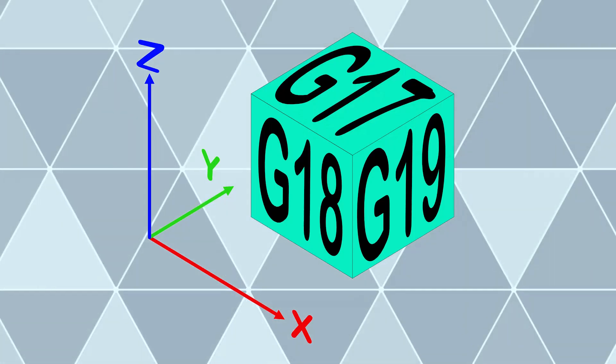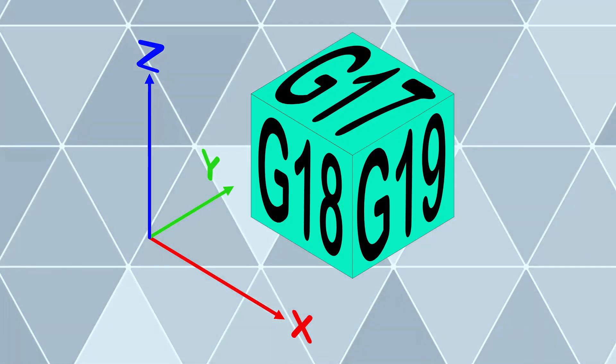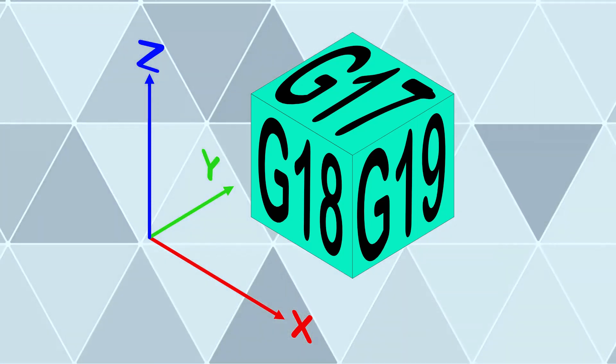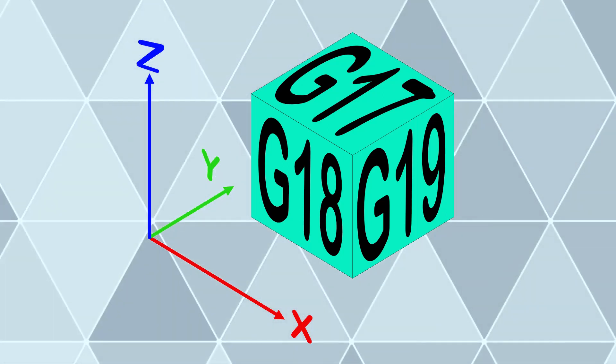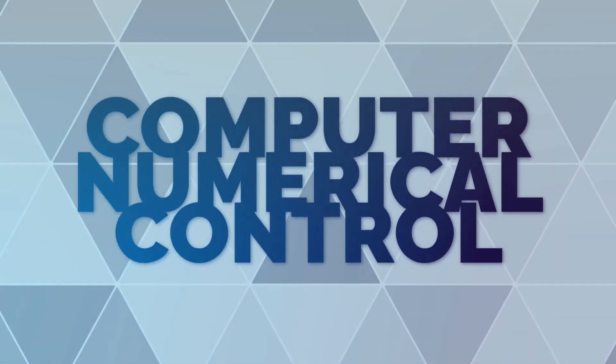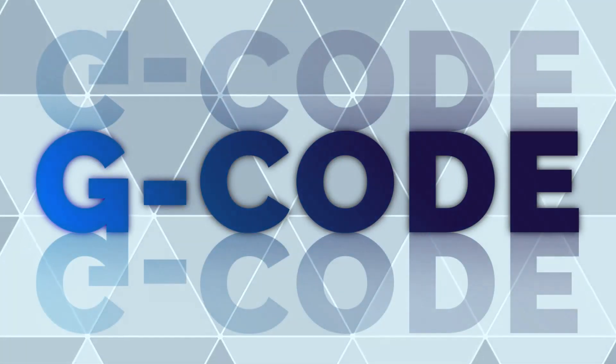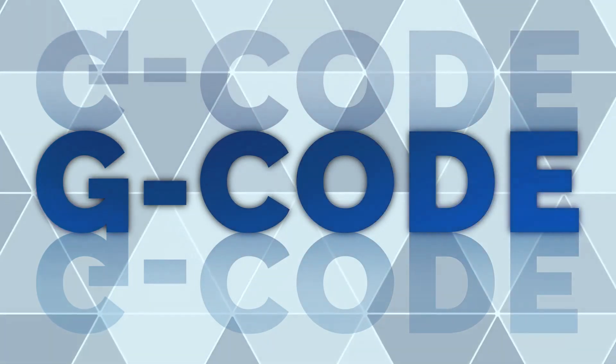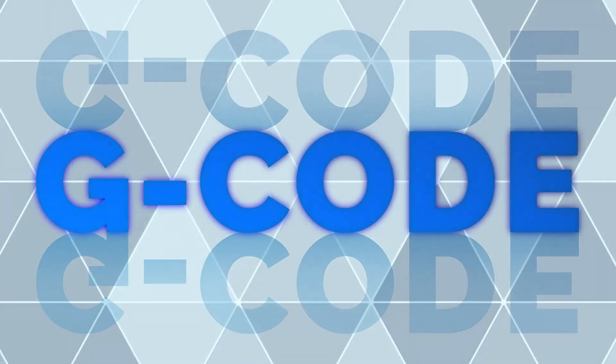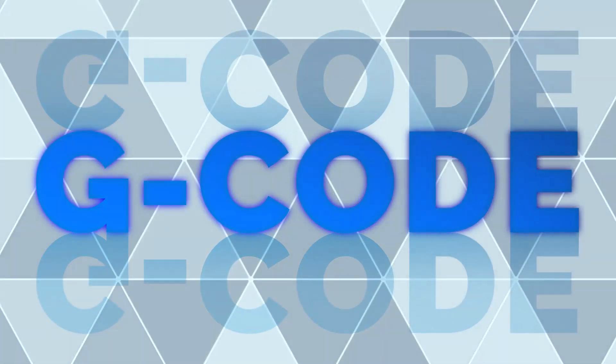Understanding G17, G18, and G19 is key to 3D machining. By setting the plane, you're telling your machine how to interpret the instructions that follow. While you might not use these codes every day, they're vital tools in your G-code toolkit. That's all for this video on plane selection. In our next episode, we'll delve deeper into more G-code commands. Until then, keep practicing and continue learning. Happy machining!